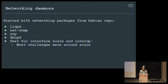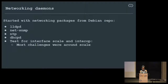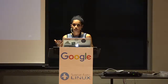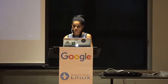Debian's ecosystem repos have all sorts of networking daemons — PTP and many more. The initial days of porting Debian to networking hardware involved getting all these daemons, testing them for interface scale and interoperability. Most challenges were around scale — not only the number of physical ports, but when you do bridging and VLAN in a native Linux way, you end up creating network interfaces on the ports, easily scaling to hundreds and thousands of network interfaces.